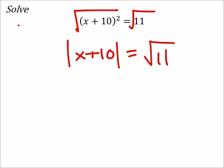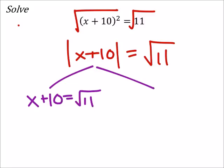So since I have an absolute value, I need to split this up into two separate equations. And I would have x plus 10 equals the positive square root of 11, and x plus 10 equals the negative square root of 11.